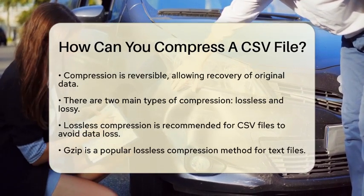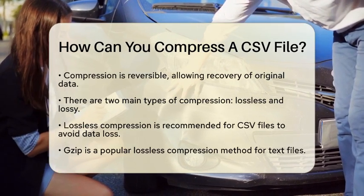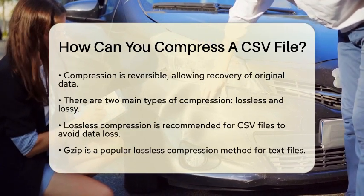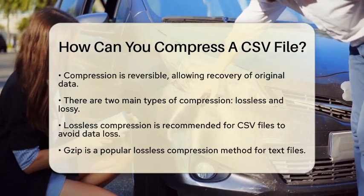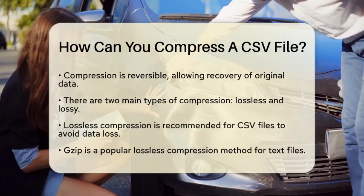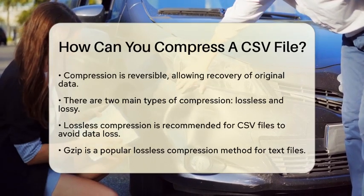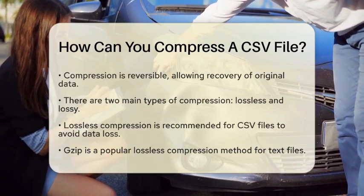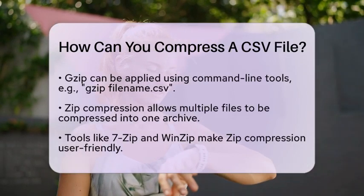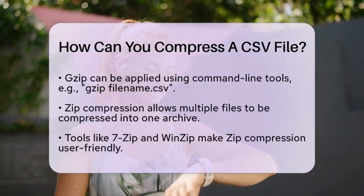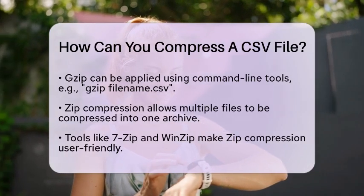Another popular option is zip compression. Zip can compress multiple files into one archive, making it versatile. You can use tools like 7-Zip or WinZip to compress your CSV files. Just select the file, right-click, and choose the option to compress it. This method is user-friendly and effective.